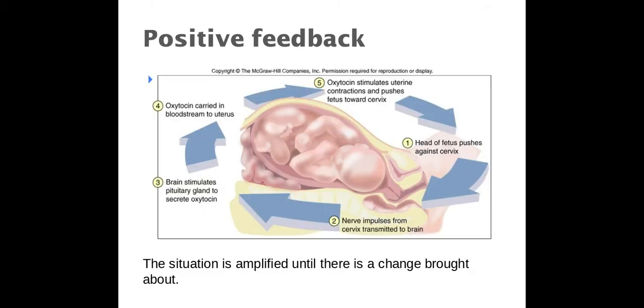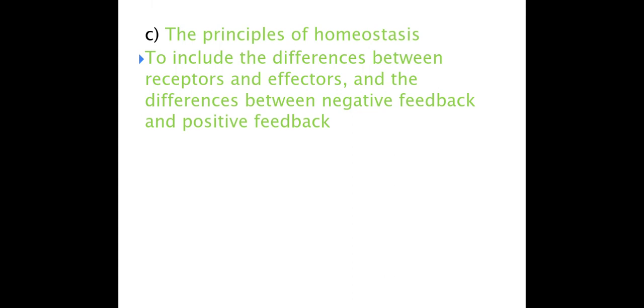Positive feedback. This is where a situation is amplified until there is a change brought about. An example of this would be labour that precedes childbirth. And in this particular example, the head of the fetus pushes against the cervix, which causes nerve impulses to be sent to the brain. The brain then causes oxytocin to be released. And then the oxytocin in turn stimulates stronger contractions. And this will carry on going until the baby is born. So positive feedback is where this change here is amplified. Whereas in negative feedback, the change was brought back to the normal level very, very quickly. So those are the differences between positive and negative feedback.